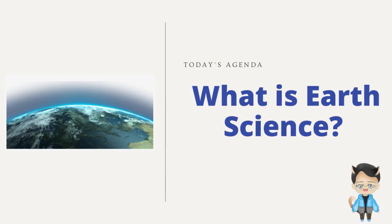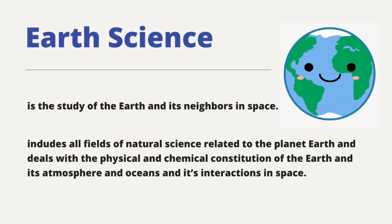From the question itself, we might notice that it tackles mainly about our Earth. But does it really talk about it? How do we know that we are dealing with things that are in the field of Earth Science? Earth Science, in simple definition, is the study of the Earth and its neighbors in space. It includes all the fields of natural science related to the planet Earth and deals with the physical and chemical constitution of the Earth and its atmosphere and oceans and its interactions in space. It also involves how the natural world interacts with its surroundings. It is an exciting science with many interesting and practical applications.